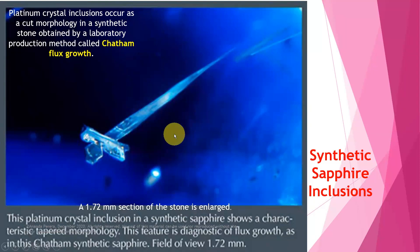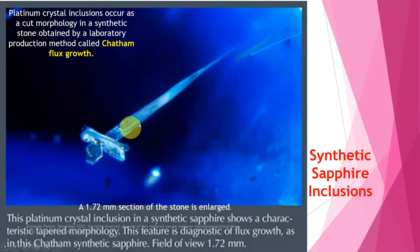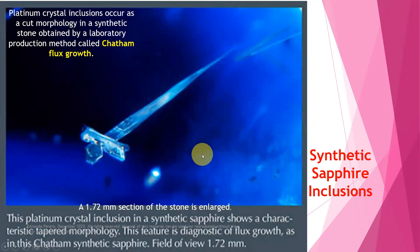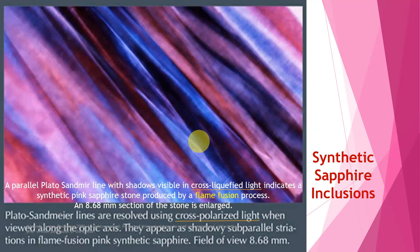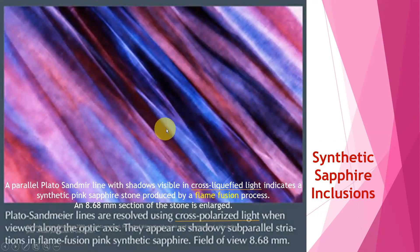Now this is a synthetic sapphire. The method this synthetic sapphire was created by is called Chatham flux growth. This is a platinum crystal inclusion with a nice shape — so morphology is there. Platinum crystal inclusions with a cut morphology in a synthetic stone obtained by Chatham flux growth production — this is a 1.72 millimeter enlarged section. Here you can see parallel layers. The name for this is Plato's Senier lines. You can see the lines make with their own shadows. Here they are visible.